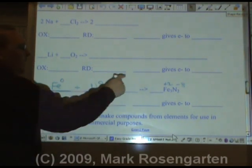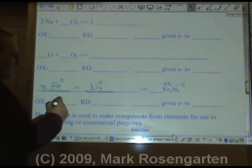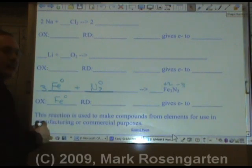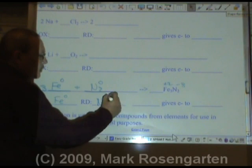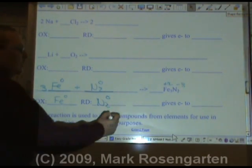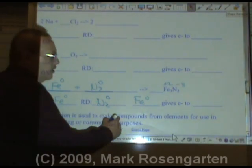Iron starts off as zero and ends as plus two. It lost its two valence electrons. Fe zero is oxidized. Because nitrogen's charge went down to a negative value, N2 zero was reduced. So the iron gave the electrons, its valence electrons, up to nitrogen.